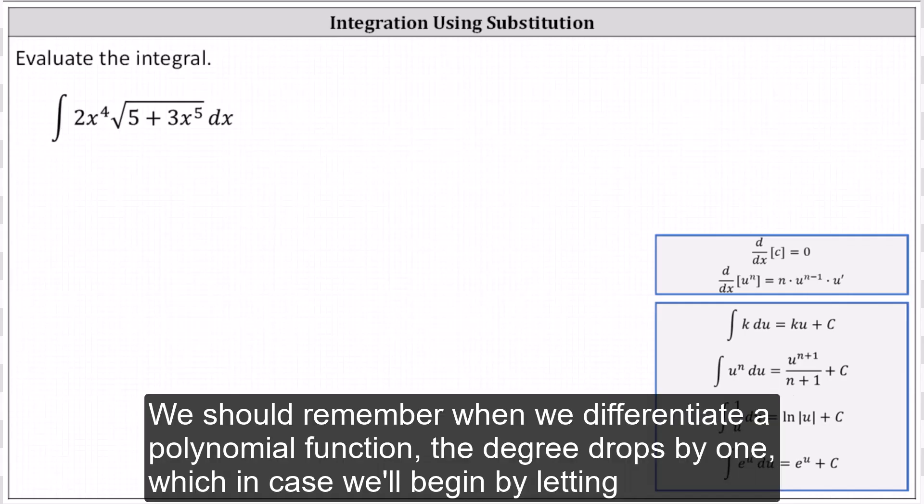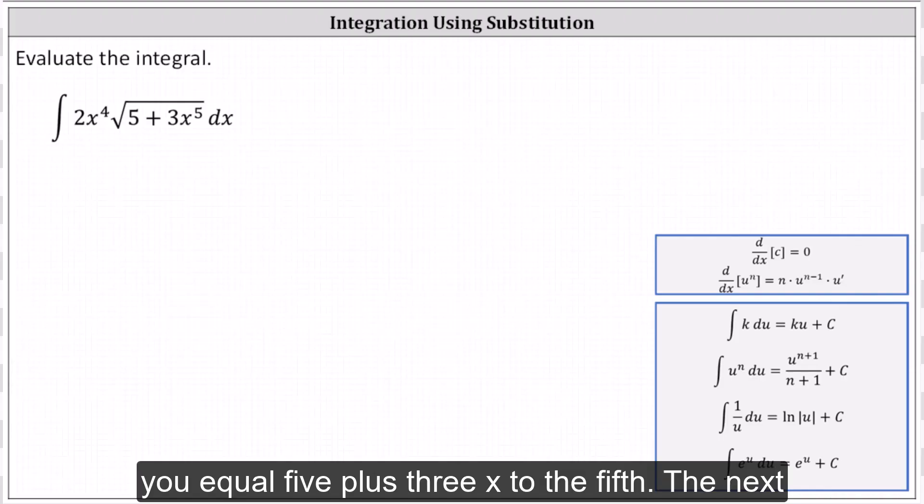We should remember when we differentiate a polynomial function, the degree drops by one, which indicates we'll begin by letting u equal 5 + 3x^5.